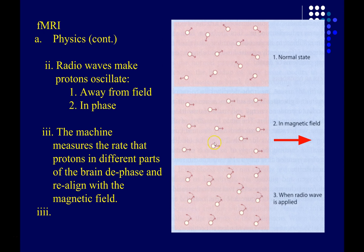Individual protons — individual subatomic particles — have a property called spin. You'd have to talk to a nuclear physicist about exactly what this is, but you can conceptualize it as being kind of like a spinning top: it has an axis around which it spins. Normally, that axis is pointed in all sorts of random directions. When we put the person in a very strong magnetic field, like the one created by the MRI machine, those axes line up.